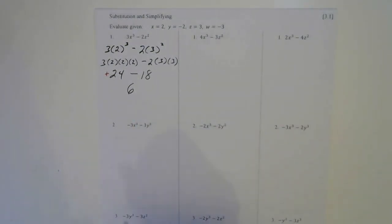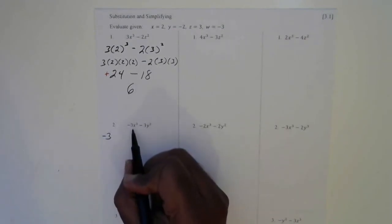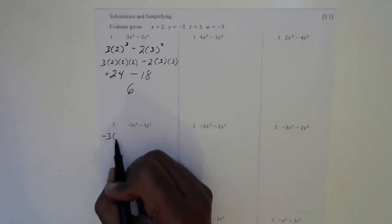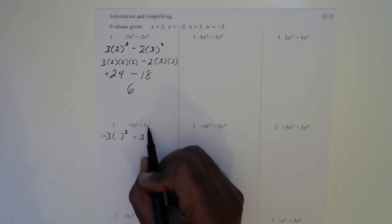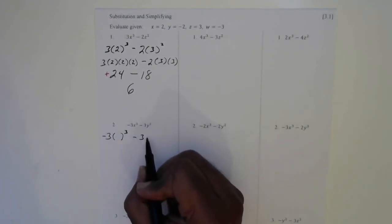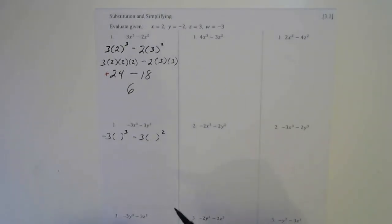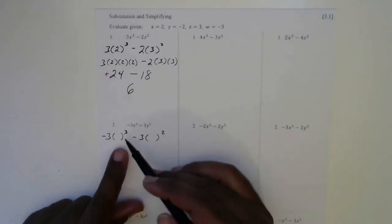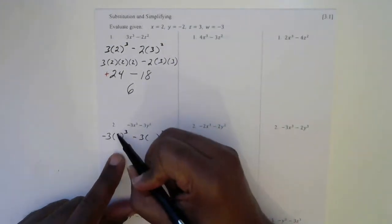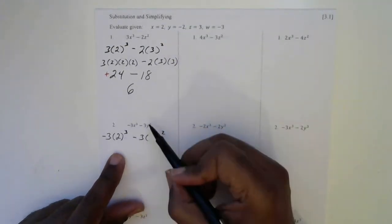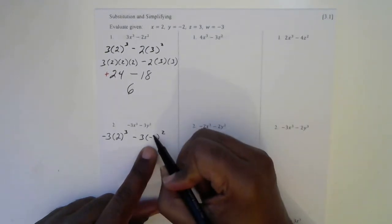Next, we have a negative 3, and then there's an x to the third power, so we'll put parenthesis to the third power. Minus 3, this is a y to the second power, so we'll put parenthesis to the second power. We'll look up what the x is — the x here is a 2, so we're going to put 2 in here. And the y is a negative 2, so we'll put a negative 2 here.